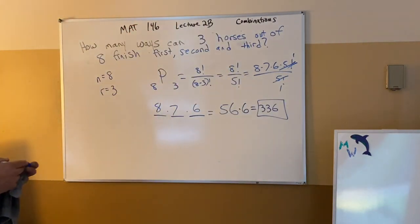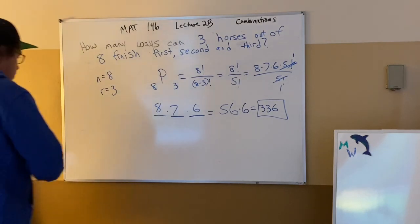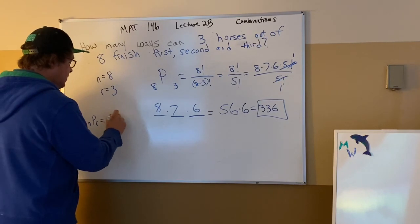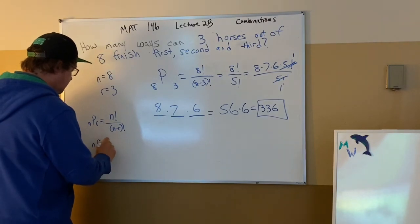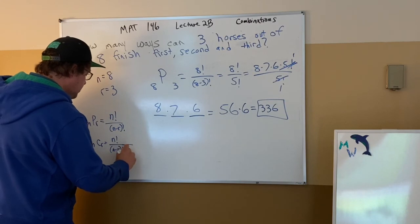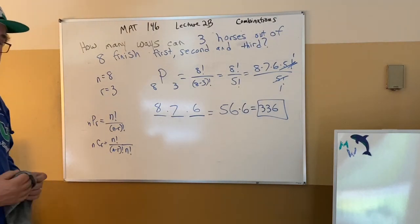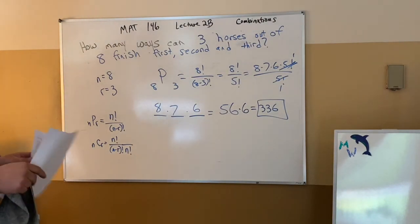This demonstration gives you an idea of the difference between a permutation and a combination, as well as how to get the resulting numbers. The permutation started with n factorial divided by (n minus r) factorial — no double division. The combination also started with n factorial and had (n minus r) factorial, but then also divided by r factorial. You can use a note card on your exams with these formulas, but you still need to know the difference between a permutation and a combination. That wraps up this lecture.